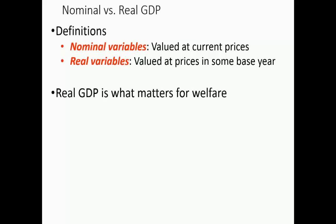Now, I mentioned the term nominal GDP. This is an important point that will come up over and over in this class: the difference between nominal and real variables. Nominal means something valued at current prices — the price today. A real variable is a variable valued at a price held fixed in some base year. Real GDP is what matters for welfare because prices change over time, but changes in the overall price level are really just changing numbers around — it's not actually making us any better off.